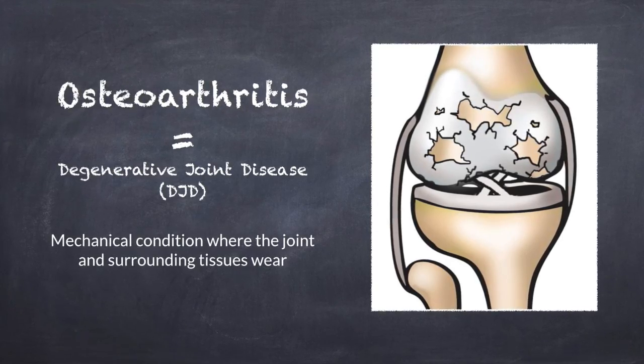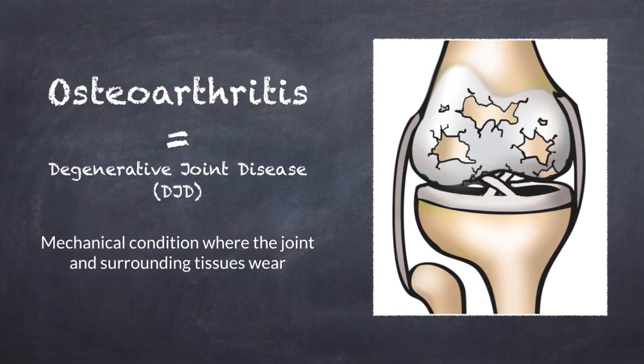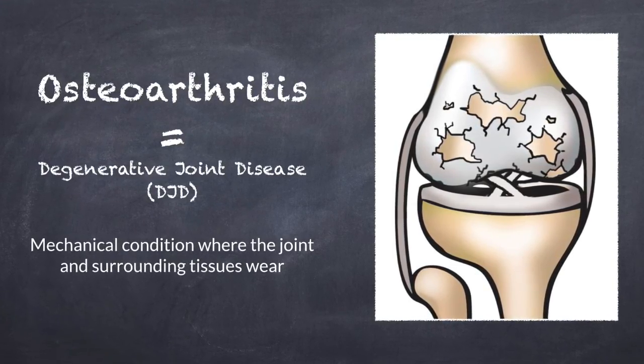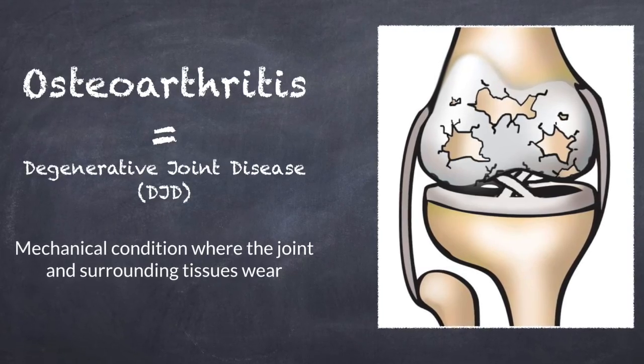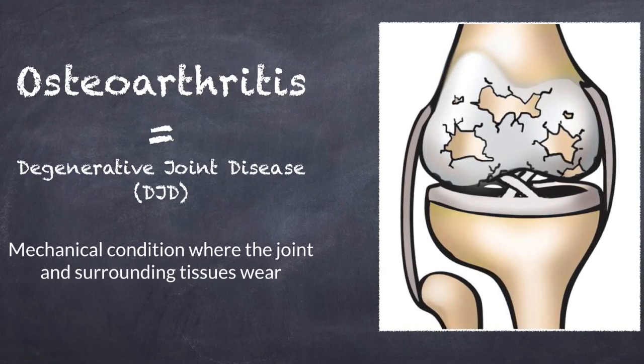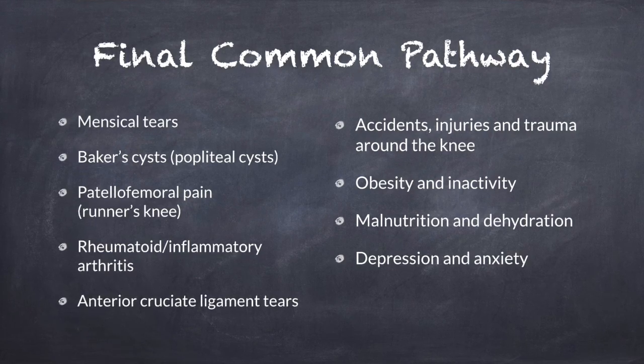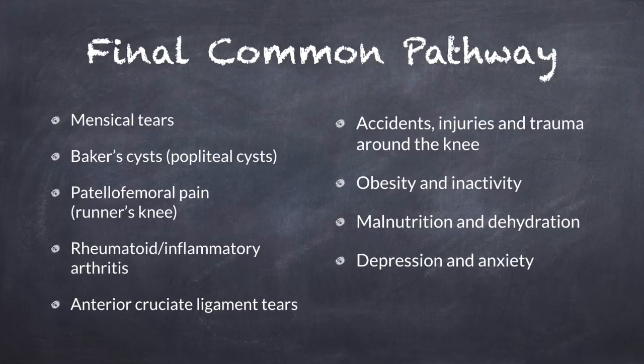Osteoarthritis in the knee is extremely common. The CDC published a study showing that approximately one out of every two of us will develop symptomatic knee arthritis at some point in our life. What I like to call osteoarthritis is degenerative joint disease — I think this is a more broad term, and it really applies to the knee because it's not only the cartilage that can go bad, it's all the structures around. I believe there's something called a final common pathway, meaning despite what's going on inside the knee, it's all part of the degenerative joint process.